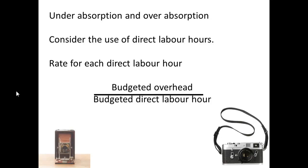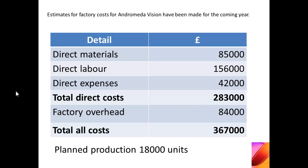We do have situations where the absorption costs that we calculate for budget purposes are either less than or greater than the actual figures at the end of the year, in which case we can have under-absorption and over-absorption. If we consider the use of direct labour hours and we want a rate for each direct labour hour, then we take the budgeted overhead and divide by the total for the budgeted direct labour hours.